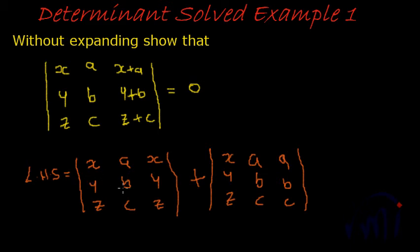Now, what is this matrix? If we remember property 3, if two columns have same number, same if the two columns have same elements, then the determinant value becomes 0.